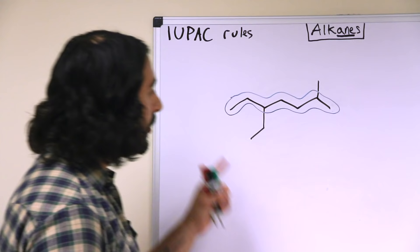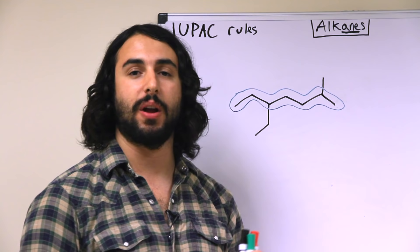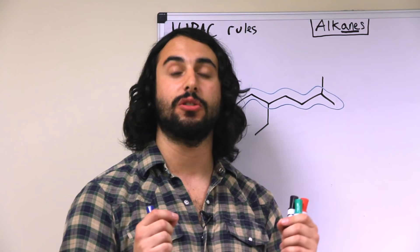Now that we have identified the longest carbon chain, we must decide which direction to number it, left to right or right to left. Again, we're going to choose the direction that gives a substituent occurring soonest.